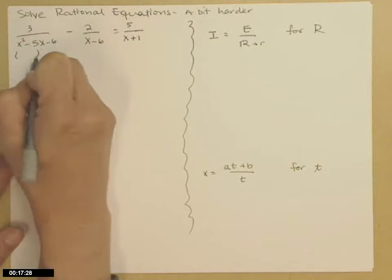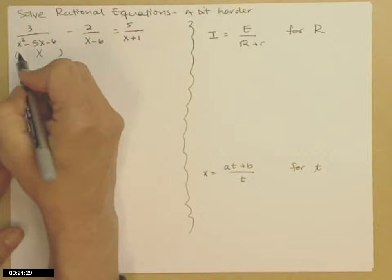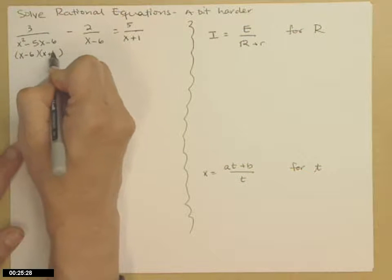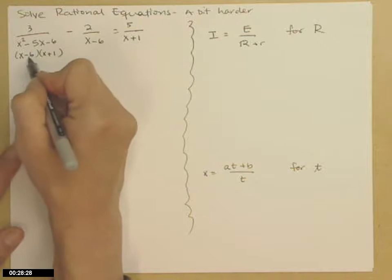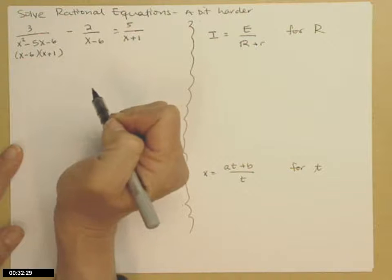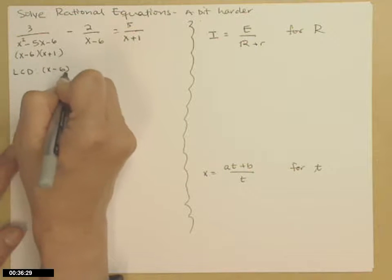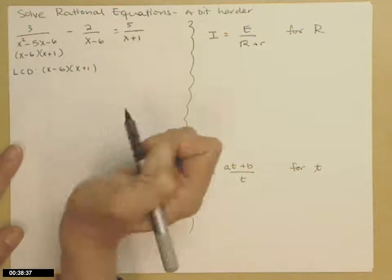Leading coefficient is 1, so I need factors of 6 that will subtract to give 5. By the way, look over here for clues. Looks like it should be x minus 6 times x plus 1. Make sure we get a negative 6 there. A minus 6x plus x gives me that negative 5x. So now I know that my LCD is x minus 6 times x plus 1.